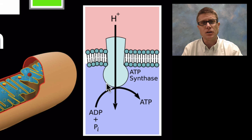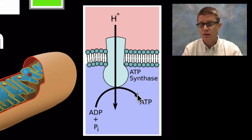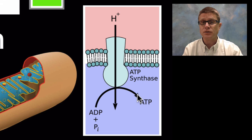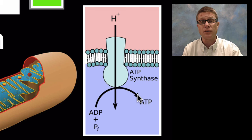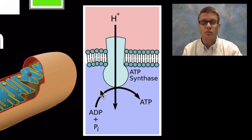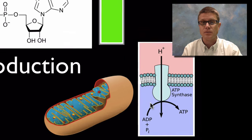Once ATP is made, diffusion moves it from an area of high concentration to low — to wherever it's needed and used. Once it's used, it converts back to ADP and a phosphate, which then returns to the inside of the mitochondria to be recharged.